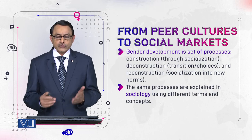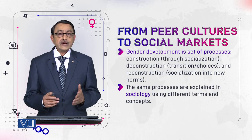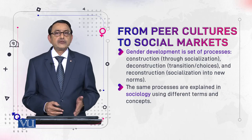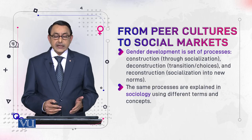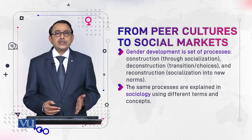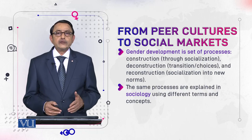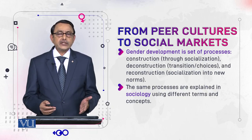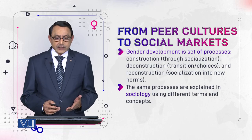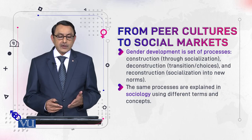The first process is construction of gender, which involves socialization. Then comes deconstruction — a transition phase — because our choices and desires interfere. The third process is reconstruction, which again takes place through socialization into new norms, because we are in a new culture, new environment, and new context.